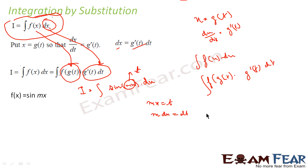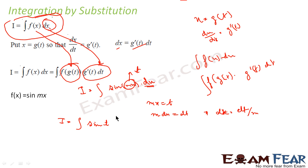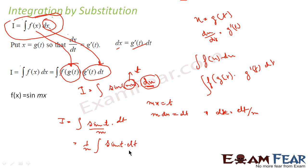If I differentiate both sides of mx = t, I get m dx = dt, so dx = dt/m. The same equation can now be written as the integral of sin(t) times dt/m. Taking 1/m as a constant outside, this becomes (1/m) times the integral of sin(t) dt, which I know equals minus cos(t).